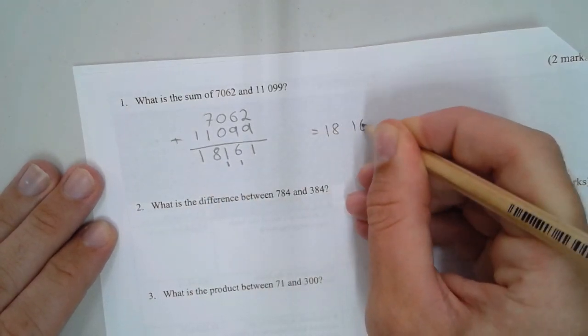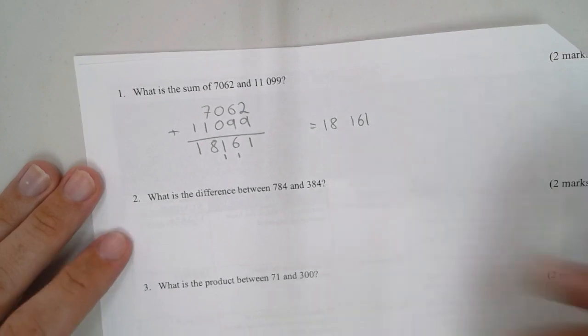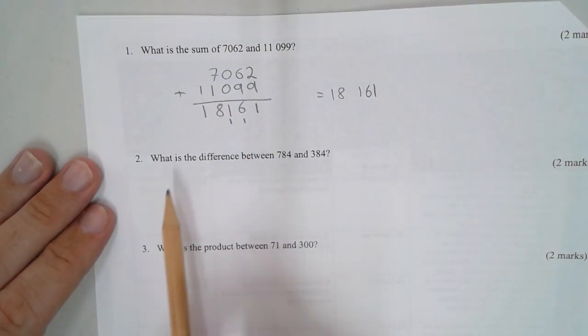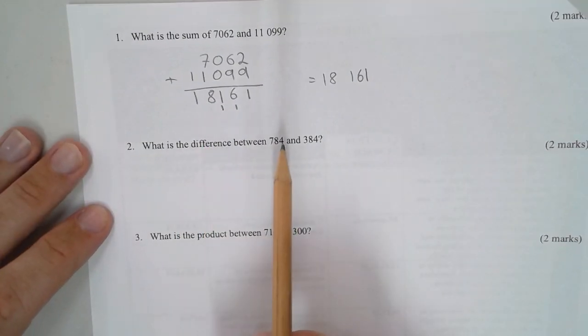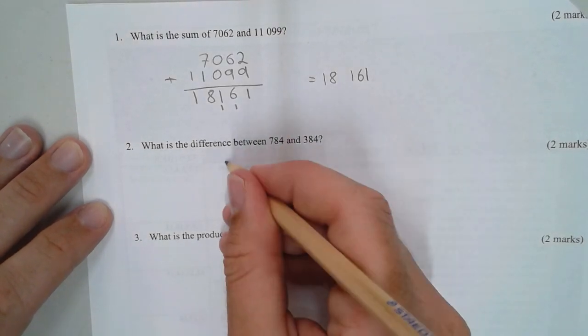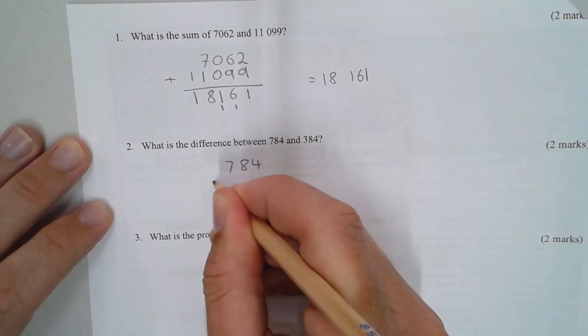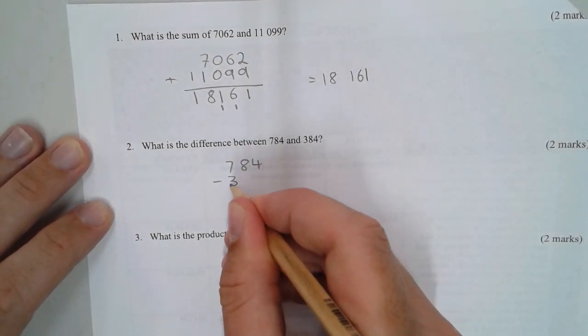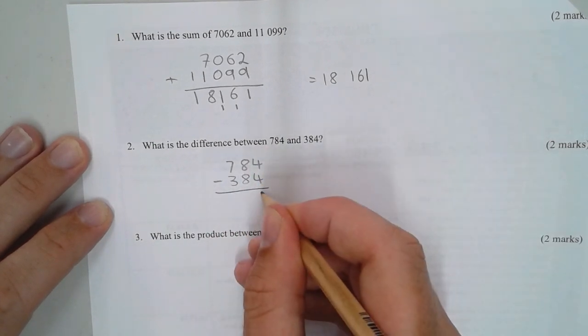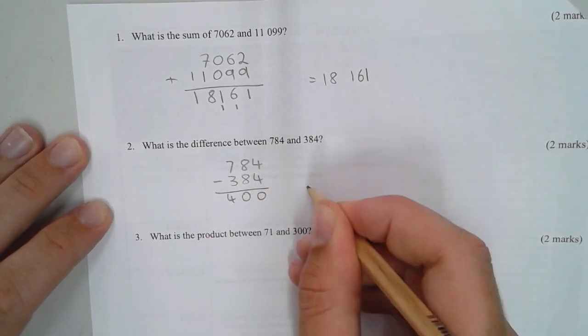Sometimes these ones can get mixed up in with your answer, so it's always best to write out the answer as well: 18,161. Number two: what's the difference? Difference means subtract.